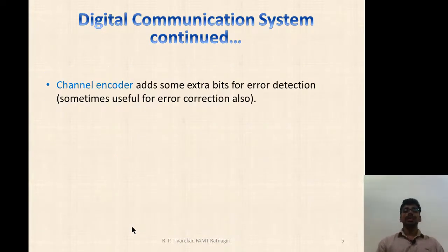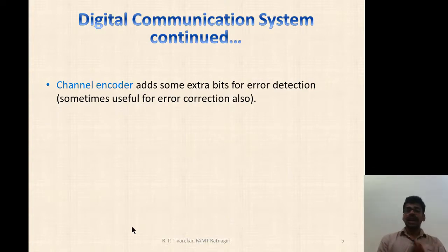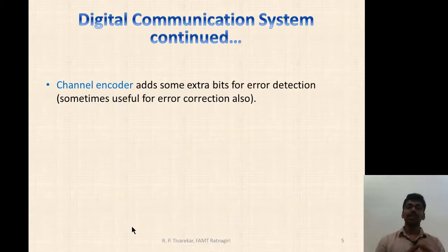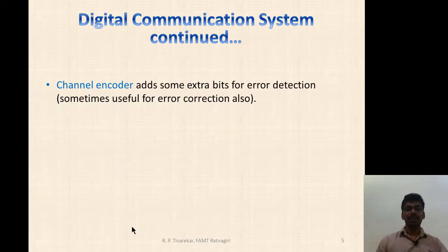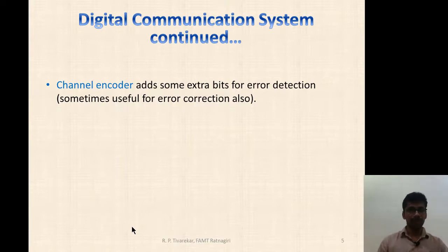The next block is Channel Encoder. Channel Encoder adds some extra bits to the output of a source encoder — these bits are called redundant bits. These are necessary for error detection and error correction purposes. Correction of all errors is not always possible, but at least it can correct a few of them.